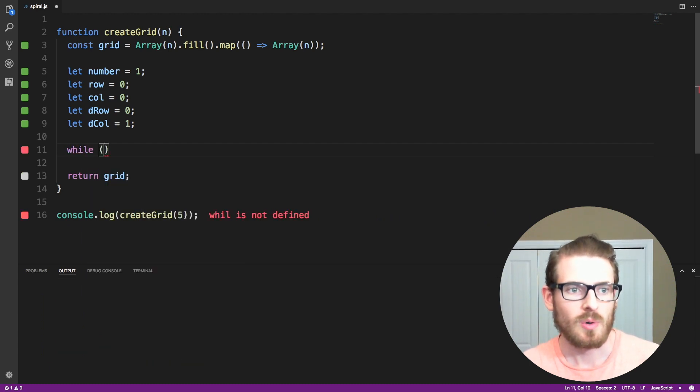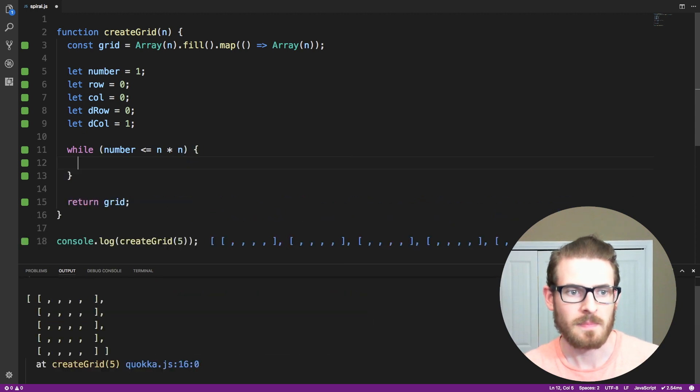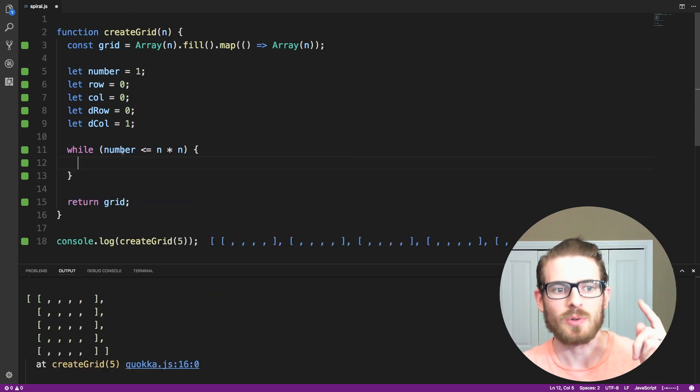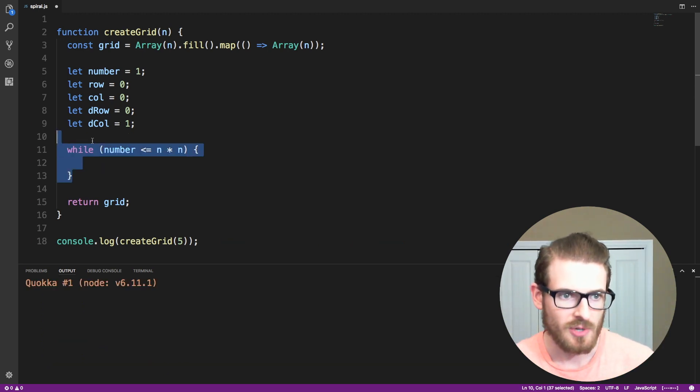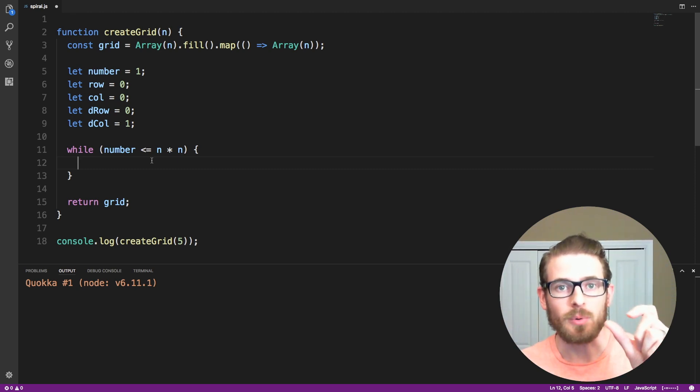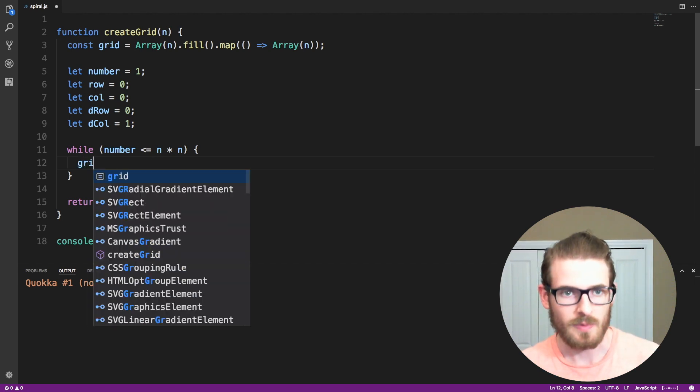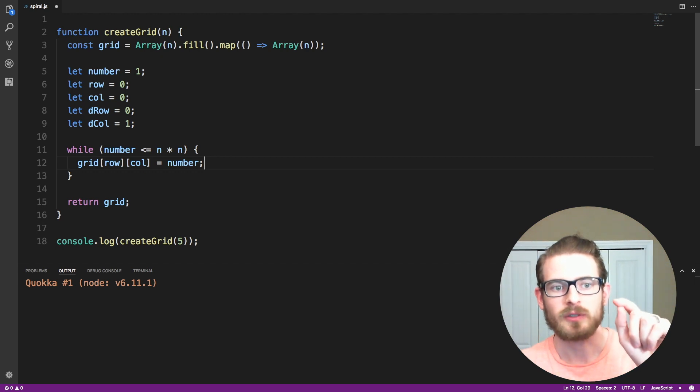So we've declared all of our starting initial variables that we're going to use for the iteration. The next step is we need to loop x amount of times until we reached n times n as our final number. So if you remember, we need to go until number is less than or equal to n times n. So in the 3 by 3 example, this will go until we reached 10, or 1 more than 9, so that should make sense as to the while loop we're doing and why we have to loop to n times n. The next step is we need to place our current number inside the grid at the current location that we're at. So if we say grid of row, column is equal to number, that will place a 1 in the top left spot, and then we need to again increment number by 1, so I'll go ahead and say number plus plus here.